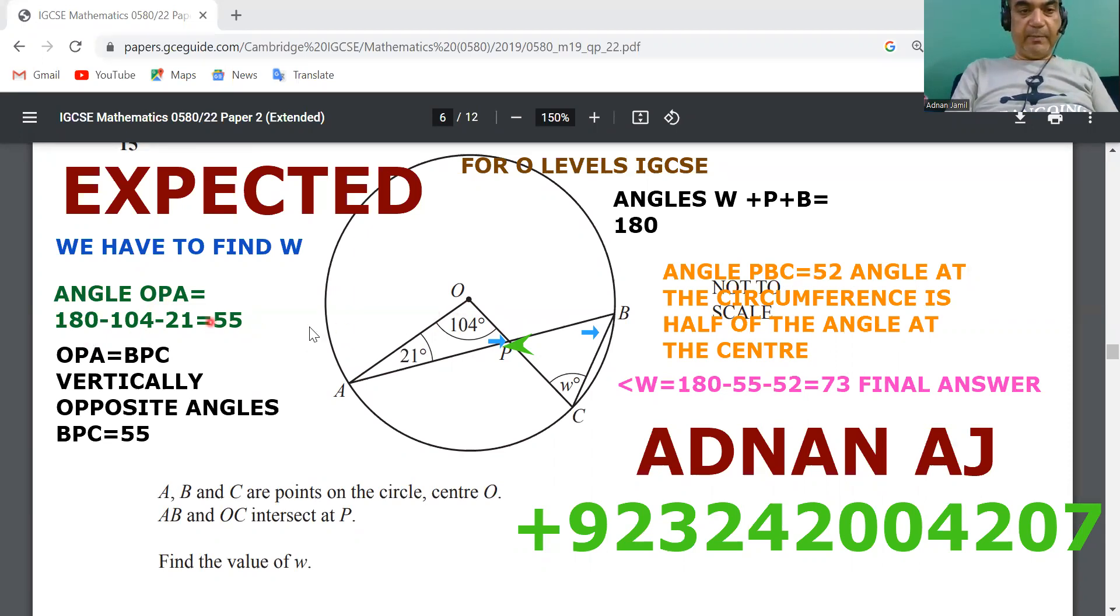One more thing which we can see is that these triangles are forming a vertically opposite angle over here at this point.